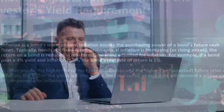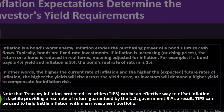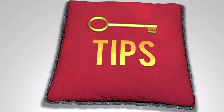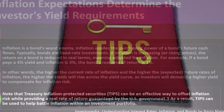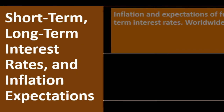The higher the current rate of inflation and expected future inflation, the higher yields will rise across the yield curve, as investors demand higher yields to compensate for inflation risk. Treasury Inflation-Protected Securities (TIPS) can be an effective way to offset inflation risk while providing a real rate of return guaranteed by the U.S. government. Unlike standard bonds, TIPS adjust with inflation rather than being completely fixed, so they can help battle inflation within an investment portfolio.